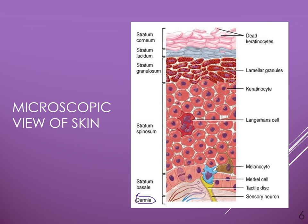The dermis lies below the epidermis. The stratum basale — also referred to as the stratum germinativum — is where new cells are born, and they migrate all the way up to the stratum corneum, where they are dead and keratinized, and then they flake off. This process just continues over and over.